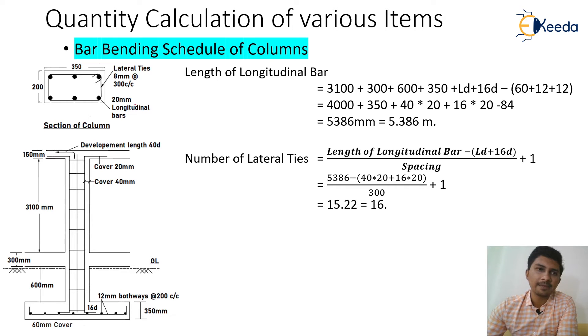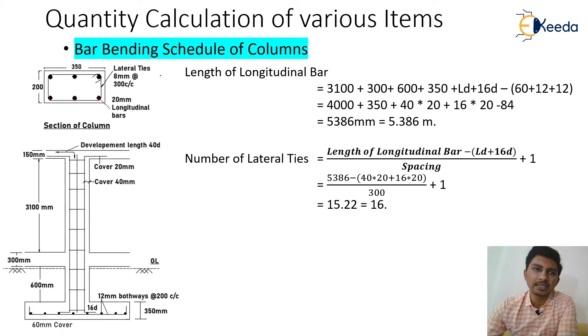There are six numbers of longitudinal bars — one, two, three, four, five, and six. Then we have the lateral ties.